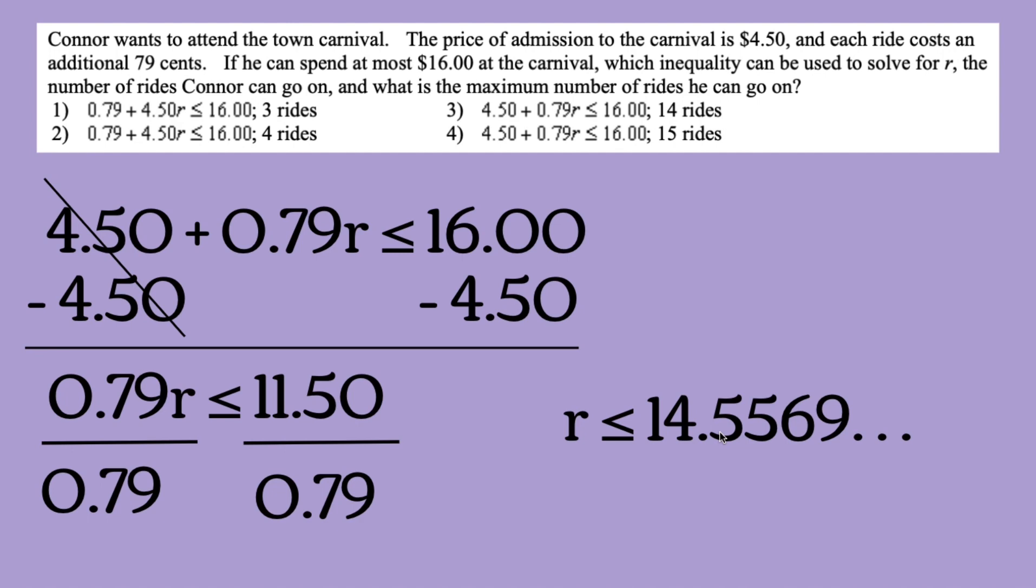Because usually, when it comes to 0.5 in problems, we round it upwards. But when we work with inequality word problems, we kind of have to put in logic here. We can't get more money, so we're going to round this down. And we're stuck with 14 rides, which is choice number 3.